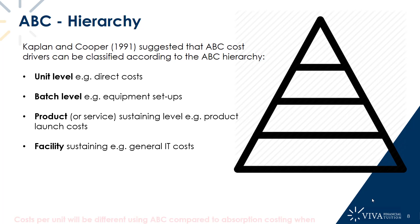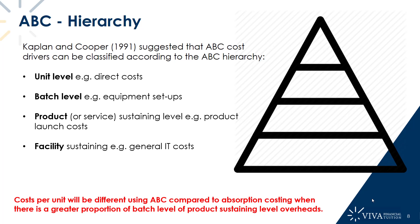Comparing activity-based costing with traditional absorption costing, where activities sit within the hierarchy determines the difference in overhead cost per unit calculated. ABC and absorption costing treat unit level costs in the same way — these are really just variable costs, mostly direct materials and direct labor. If most activities are unit level, there wouldn't be a huge difference in costs calculated using either approach.